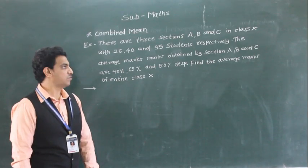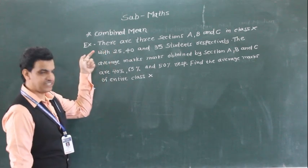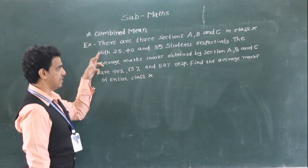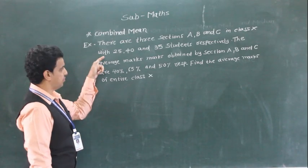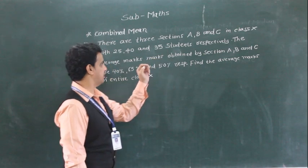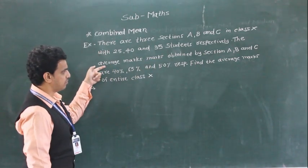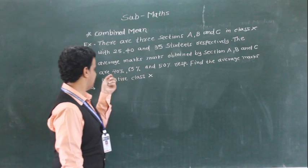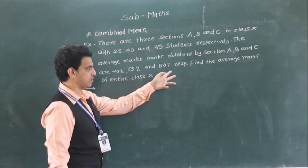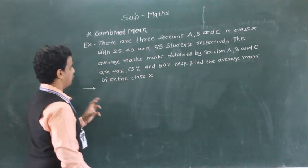Okay students, one more concept is there in your worksheet. We will take a brief example. There are three sections A, B, and C in class 10, with 25, 40, and 35 students respectively. The average marks of sections A, B, and C are 70%, 65%, and 50% respectively. Find the average marks of the entire class.